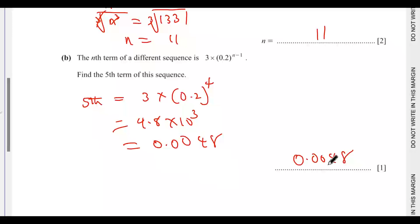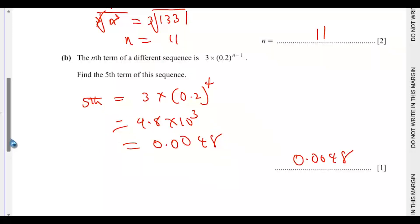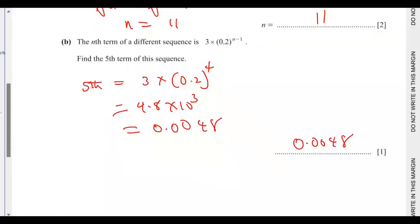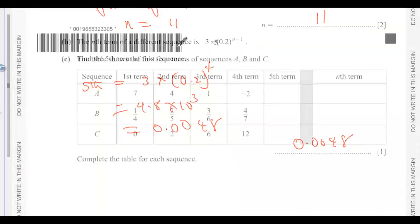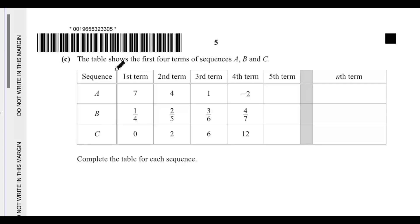So you can write 0.0048 or 4.8 times 10 to the power of negative 3. Since there is no condition to write it in standard form, you could choose either form.